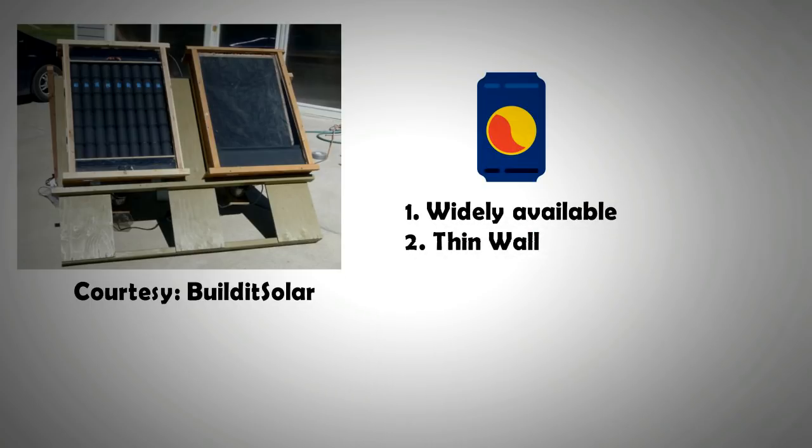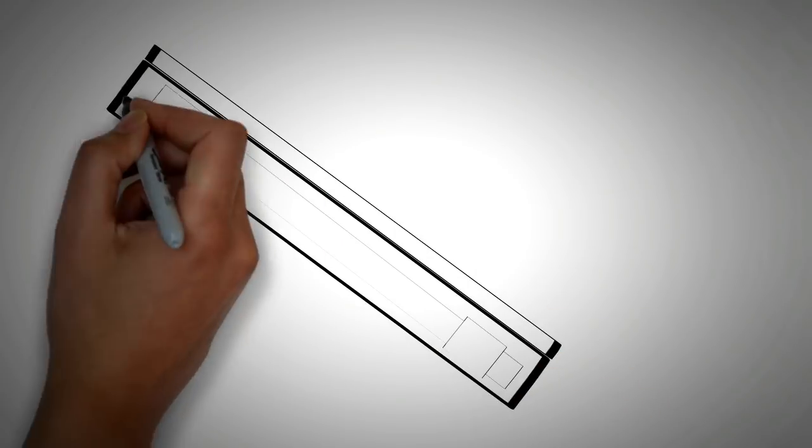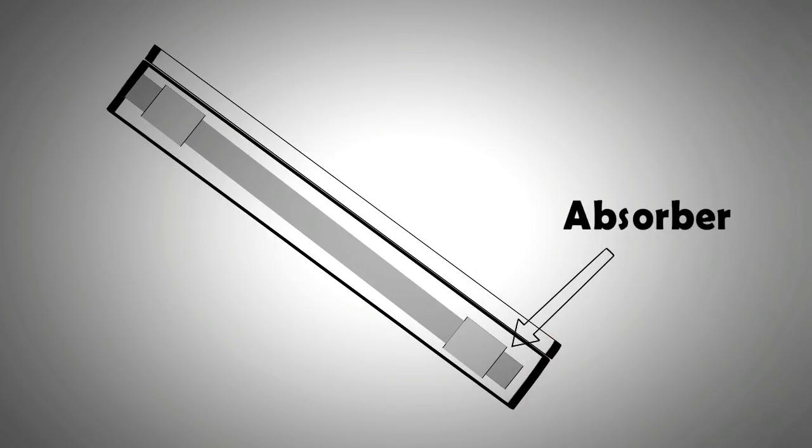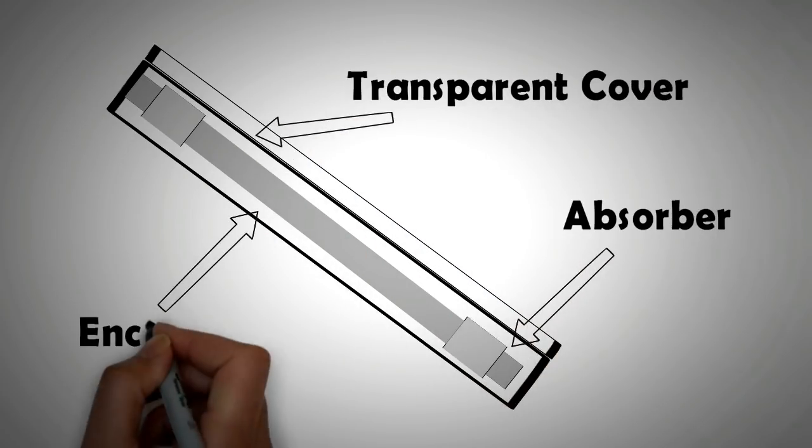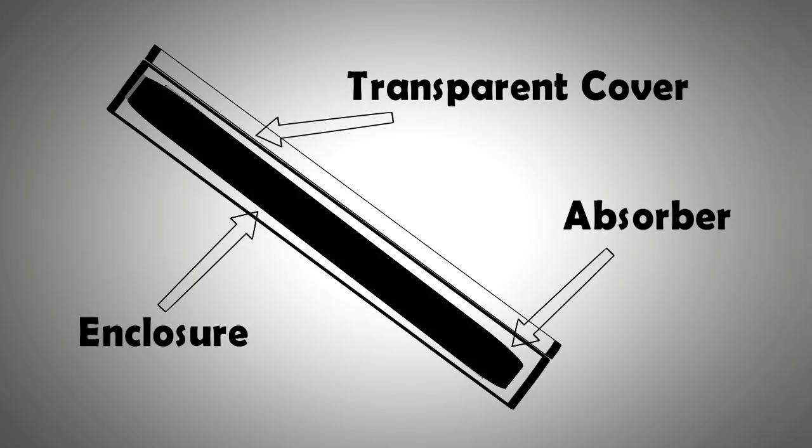There are three basic components of a solar air heater: the absorber, the transparent cover, and the enclosure. The absorber needs to be of dark color to soak up most of the radiation it receives.